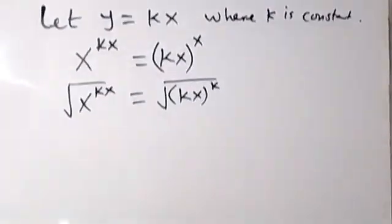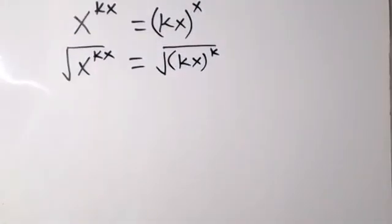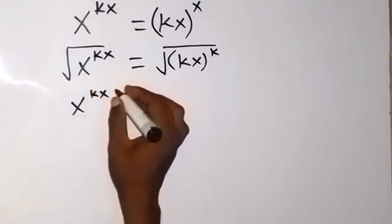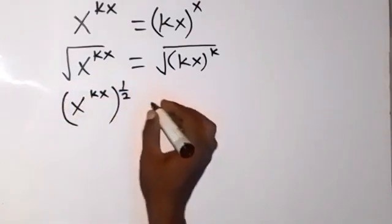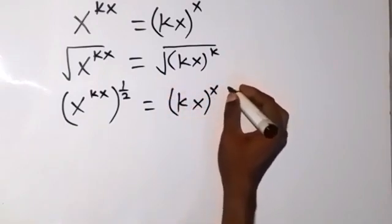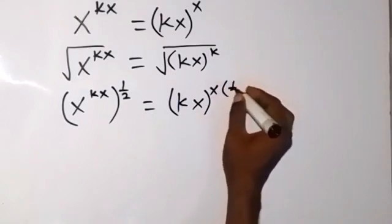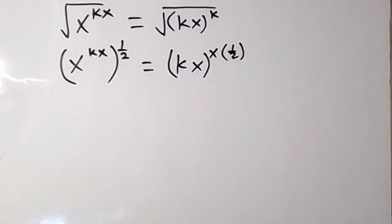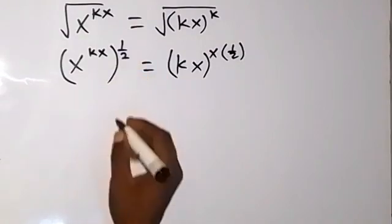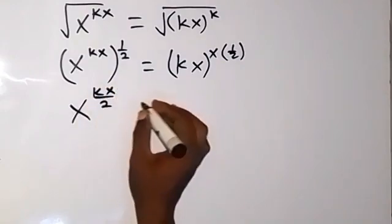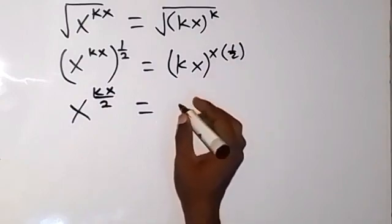We can rewrite square root as the same thing as raised to power 1 over 2. So we have x raised to power kx, then raised to power 1/2, equals kx raised to power x, then raised to power 1/2. When the powers multiply, this gives us x raised to power kx over 2, which equals kx raised to power x over 2.